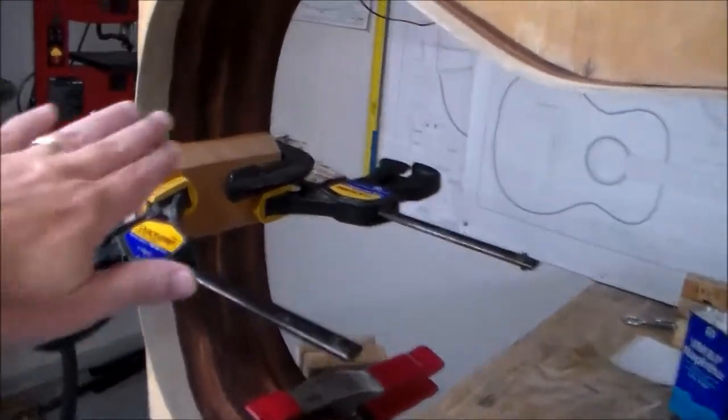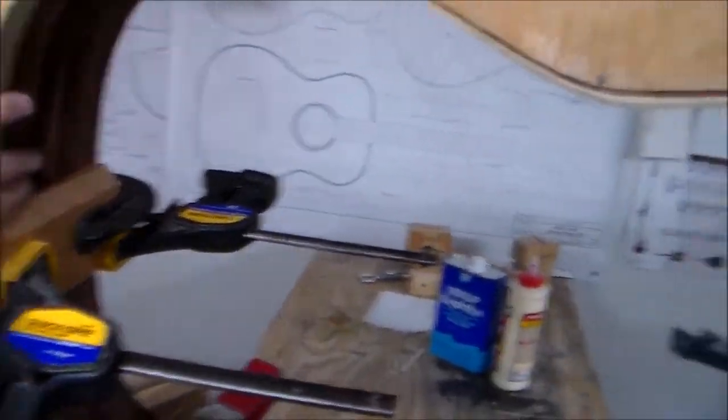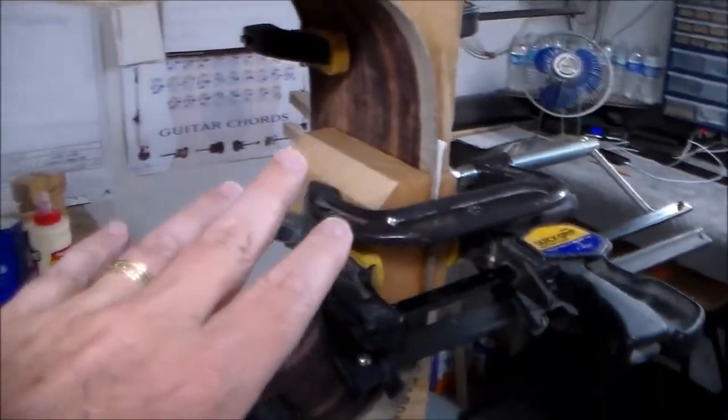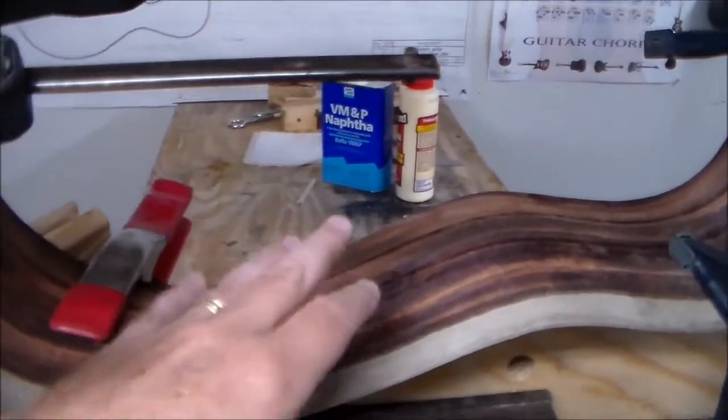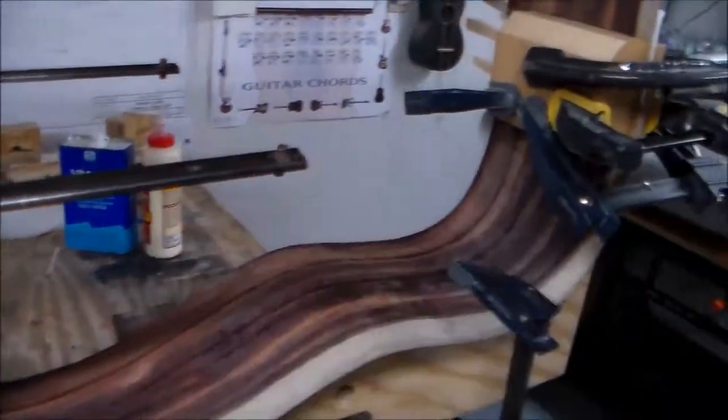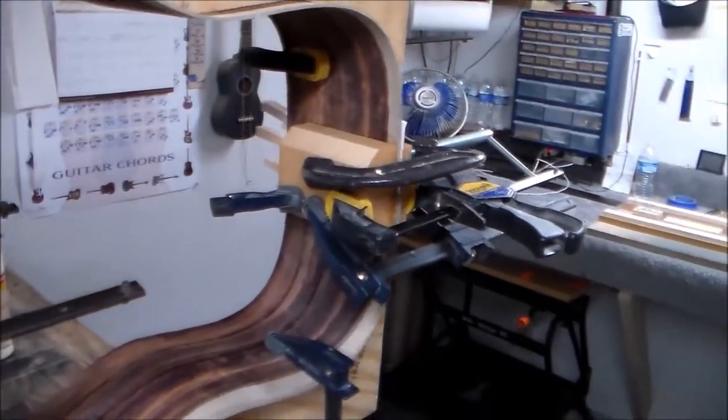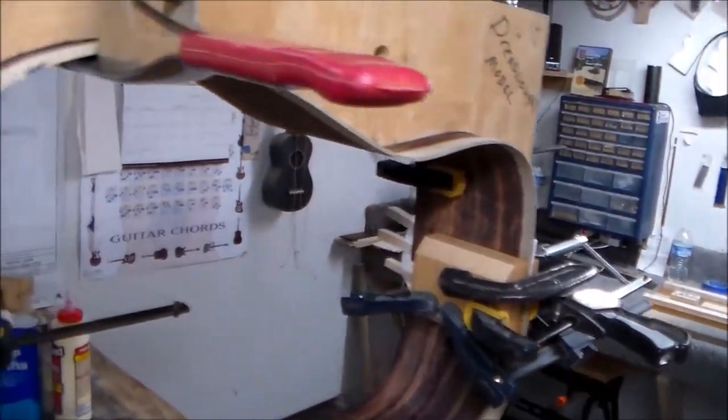Before we did this, because this type of wood does have a lot of oil in it, we did use some naphtha and wiped everything down to get rid of that oil. We wanted to make sure we had a good surface for the glue to adhere to.